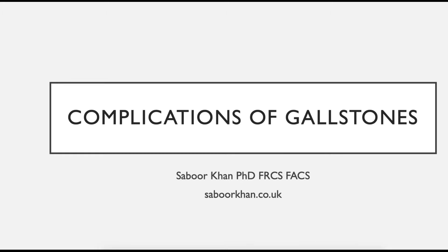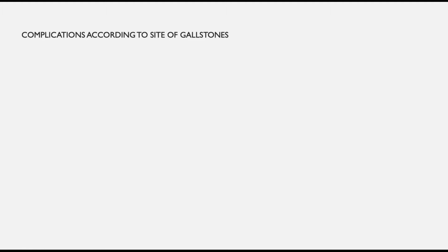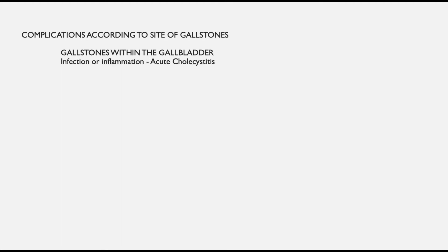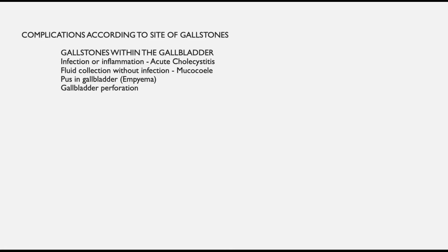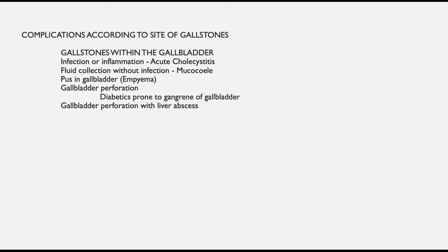In this video we will examine the complications associated with gallstones. We can divide these complications according to the site of gallstones. The gallstones can remain within the gallbladder, which is the commonest site where complications arise. The gallbladder can get inflamed or infected, fluid can collect, and sometimes this fluid can turn into pus. Gallbladders are prone to perforation, and diabetics are prone to a specific type associated with gangrene of the gallbladder wall. Sometimes gallbladder perforation occurs towards the liver and forms a liver abscess.